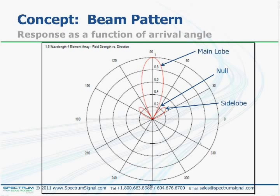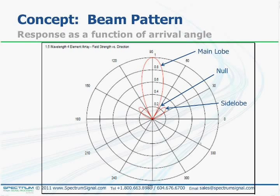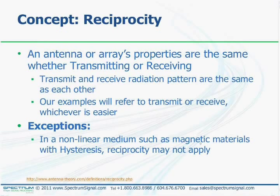To the right and left of the main beam are nulls, or points of minimum response, and you also have side lobes on the sides. In reality, you'll have multiple side lobes going all the way around. The next concept is reciprocity: most antennas and arrays behave the same way whether in transmit or receive modes, though the electronic equipment does not. In this webinar, some concepts are easier to illustrate in transmit mode and others in receive, so we'll use both. You can assume that the same properties apply in both cases.